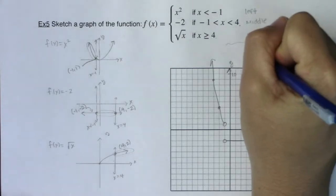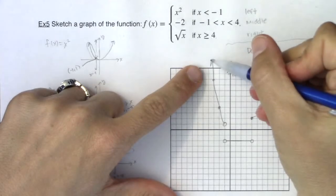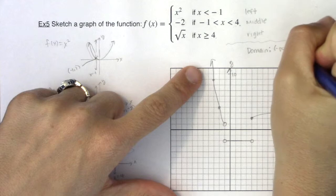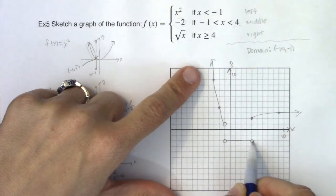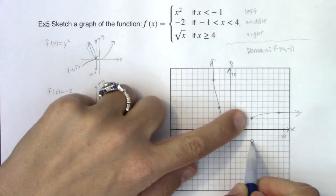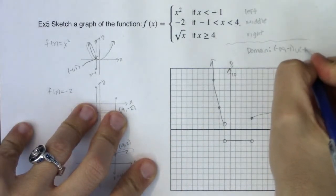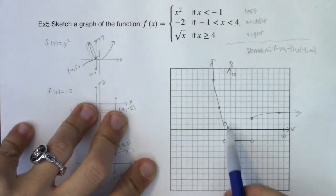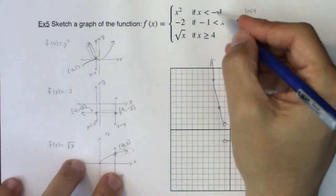I just want to go over domain and range. My domain, you can see I go left forever, but then there's an open dot at negative 1. So I do not have a y value there. But then I hop right back on. I'm going from negative 1 to 4. There's an open dot here, but a closed one here, so I don't have to worry about it. And then I go right forever. So my domain is negative infinity to negative 1, and then negative 1 to infinity. The only x value where I don't have a y value is at negative 1.